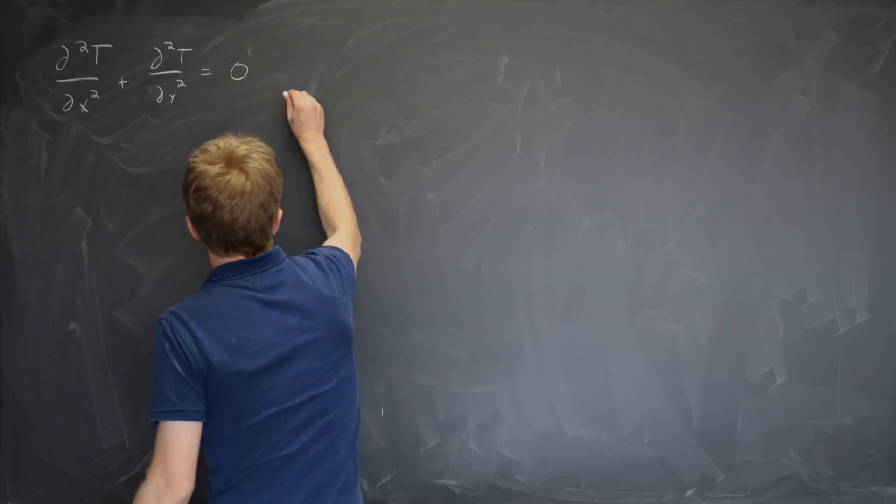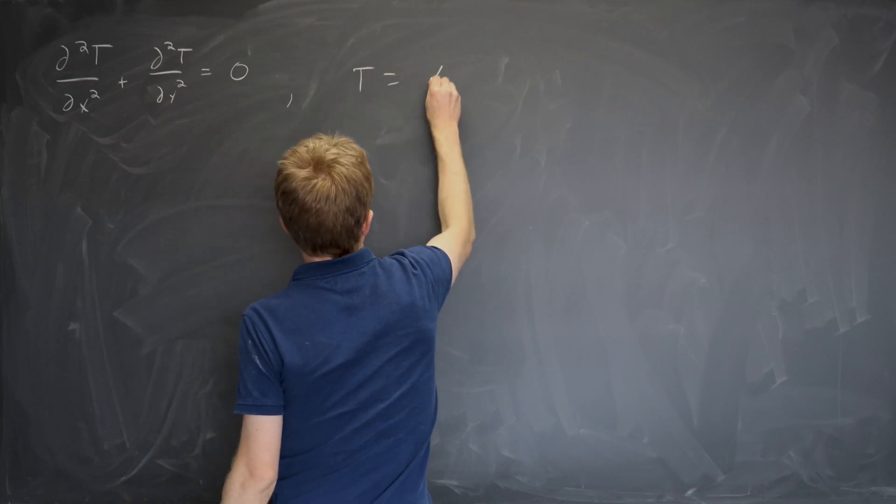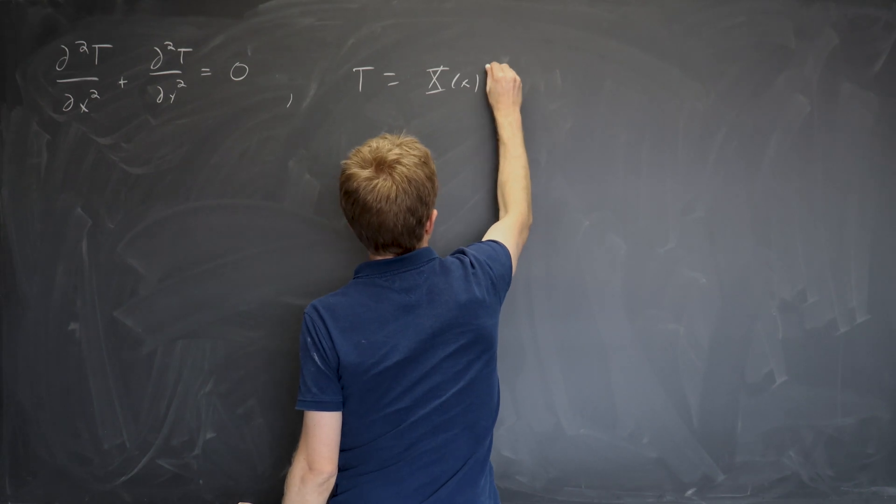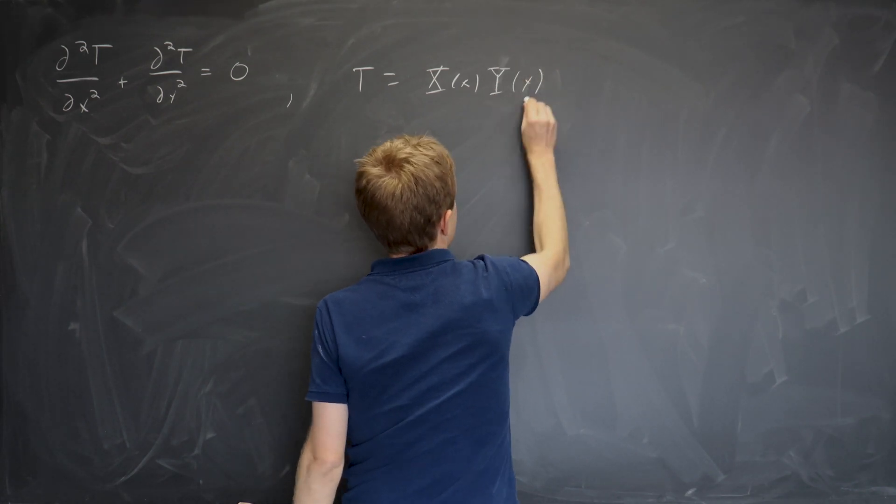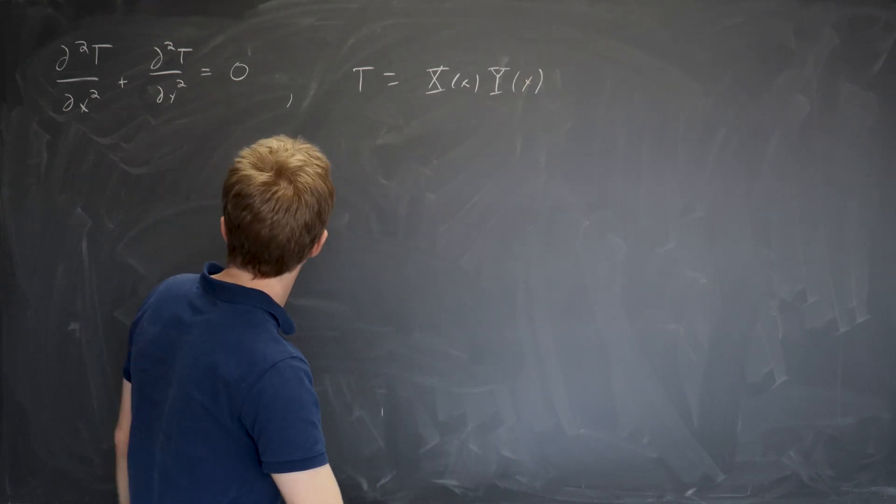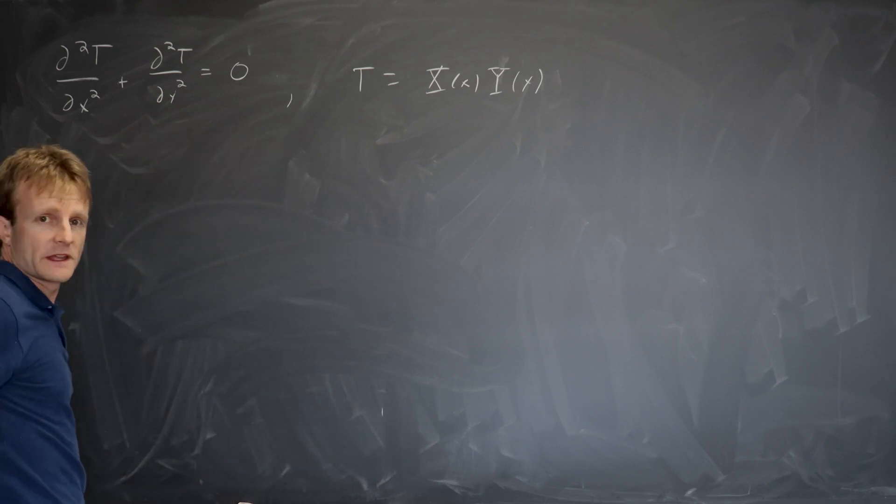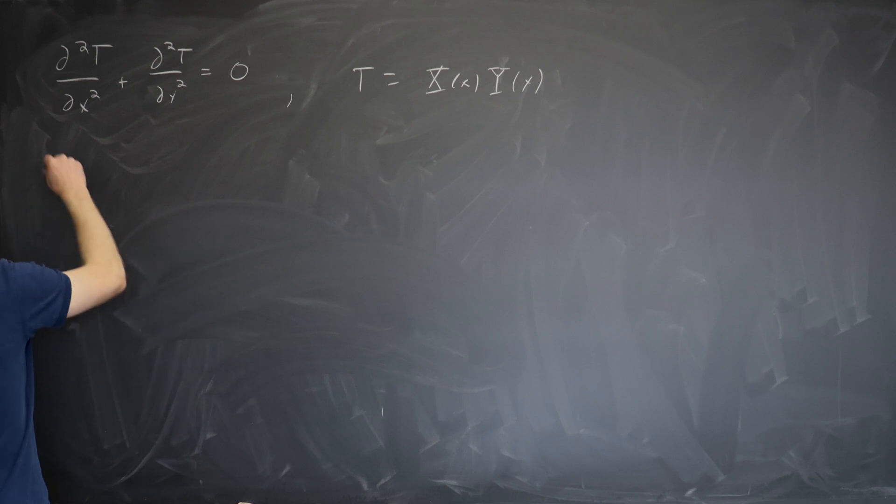So this equation separated very nicely when we made the product ansatz T equals X of little x, Y of little y. But let's change it a little bit and see if it still separates.